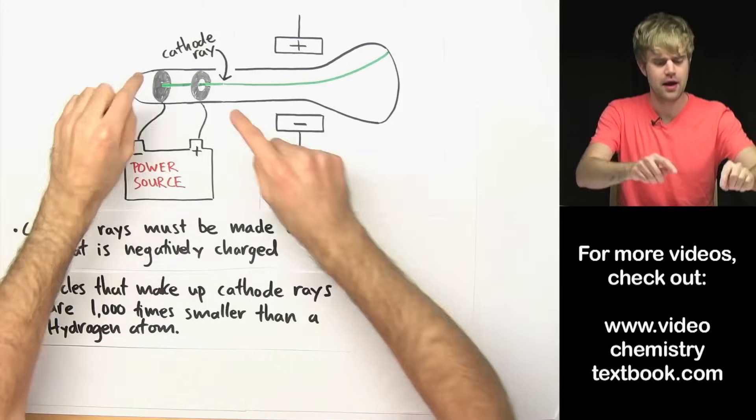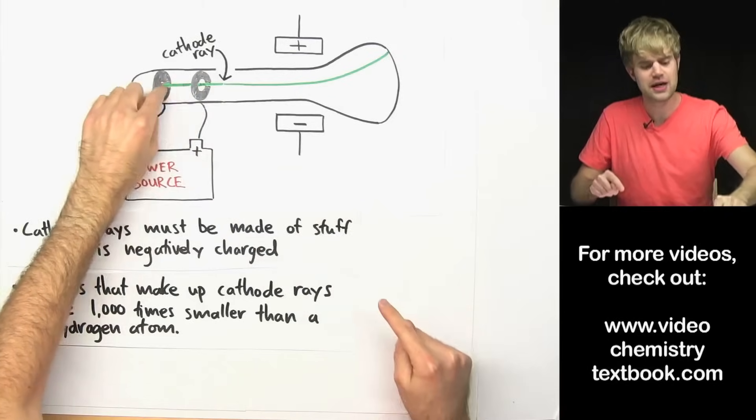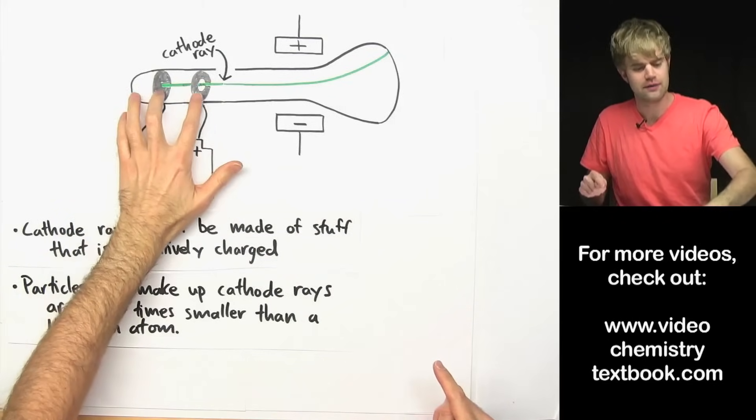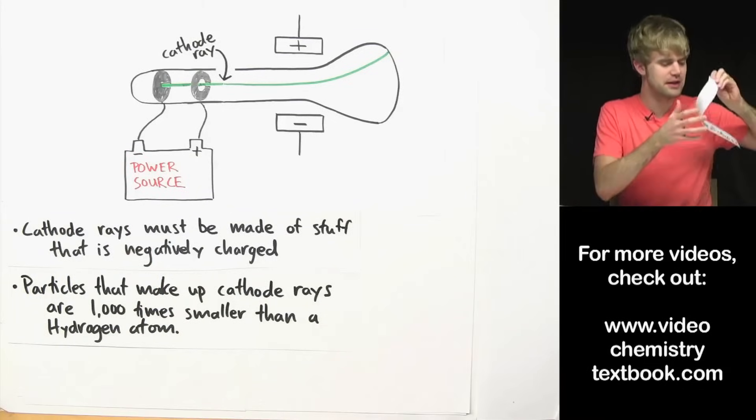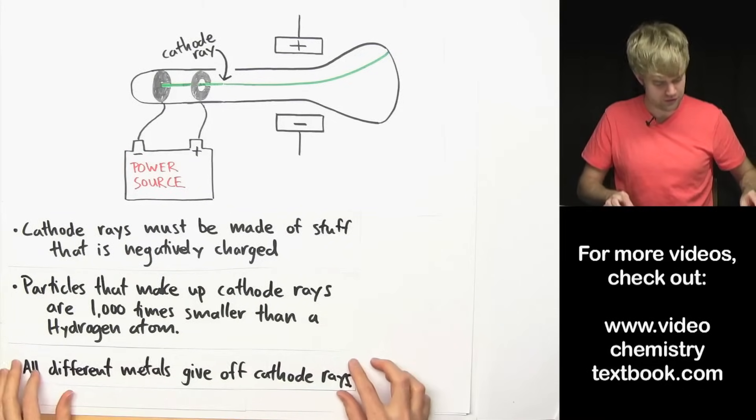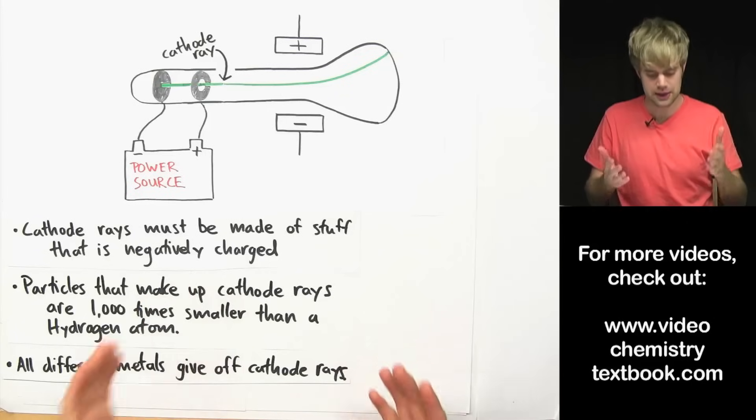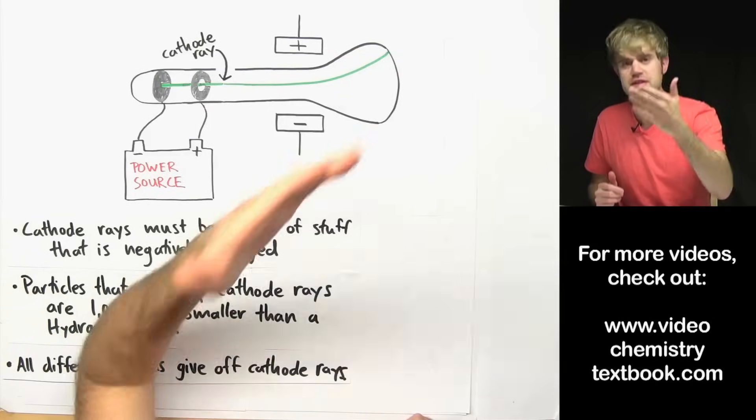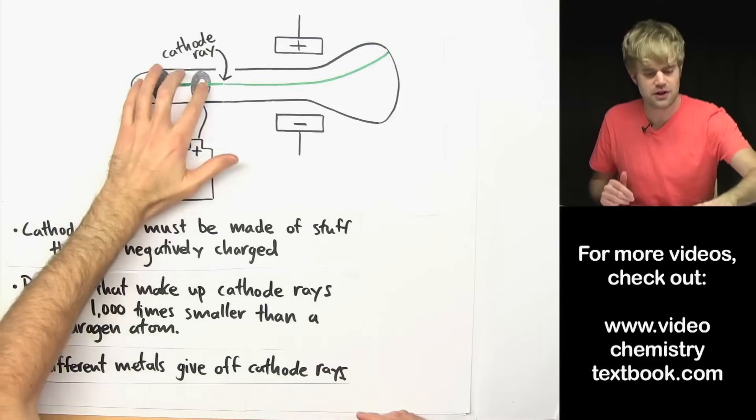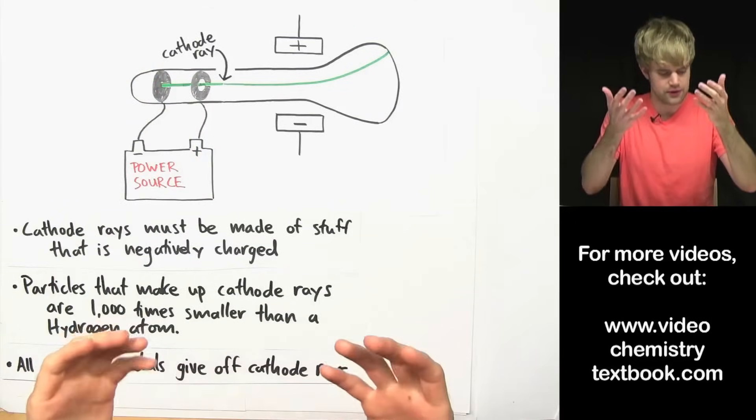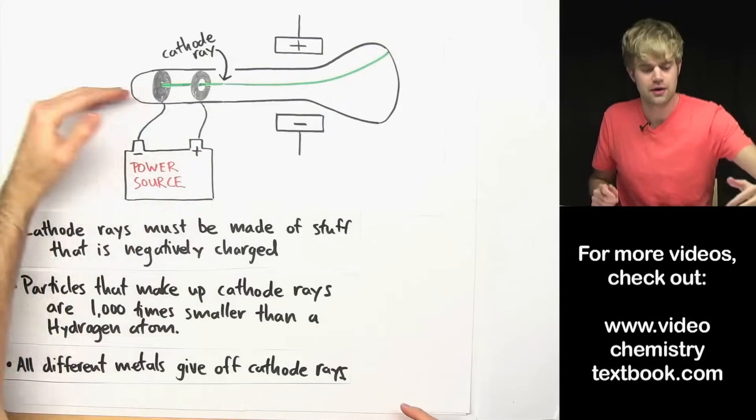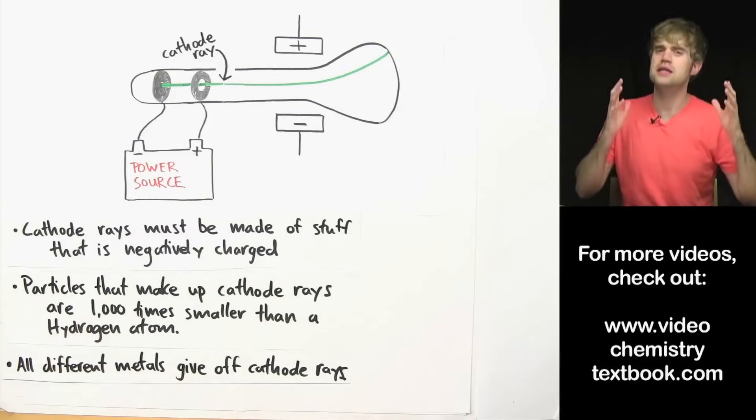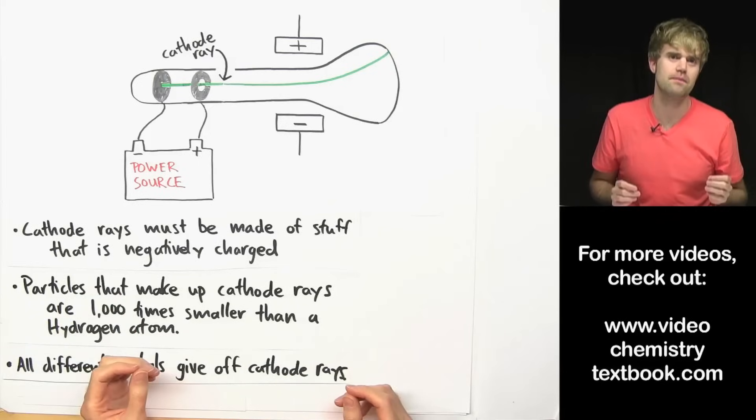So this thing that's in the cathode rays must be really, really tiny compared to an atom. And finally, Thompson swaps out the type of metal that's in the cathode tube. He uses a variety of different types of metal but he finds that all of the different metals he uses give off the same cathode rays and regardless of what metal he uses, the size of the things that are in the cathode rays is exactly the same.